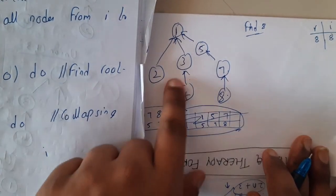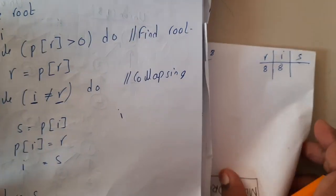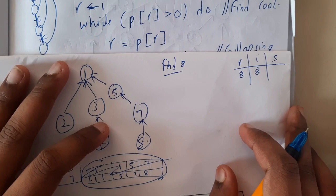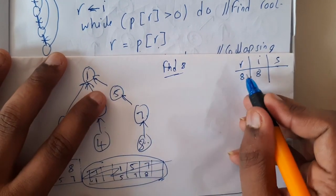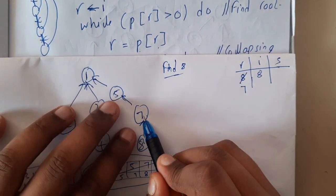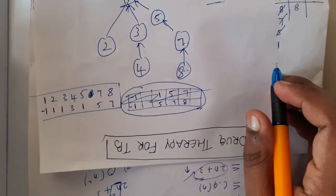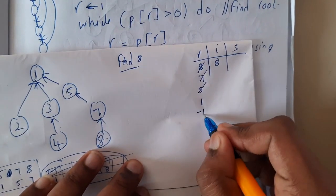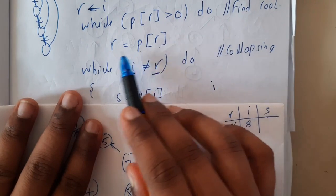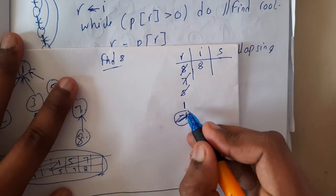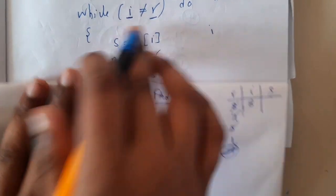Identifying parents directly from the graph is easiest. The while loop continues until we find the root, storing it in r. Parent of r: r starts at 8, so p[8] = 7, store 7 in r. Then p[7] = 5, store 5 in r. Then p[5] = 1, store 1 in r. Then p[1] = -1, which is not greater than zero, so we stop. Now r equals 1, the root.